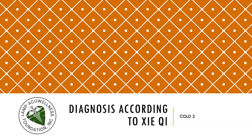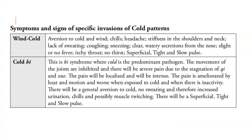We now discuss diagnosis according to pathogenic qi, continuing with cold. Symptoms and signs of specific invasions of cold patterns: in wind cold, there is aversion to cold and wind, chills, headache, stiffness in the shoulders and neck, lack of sweating, coughing, sneezing, clear watery secretions from the nose, slight or no fever, itchy throat, no thirst, and a superficial tight and slow pulse.